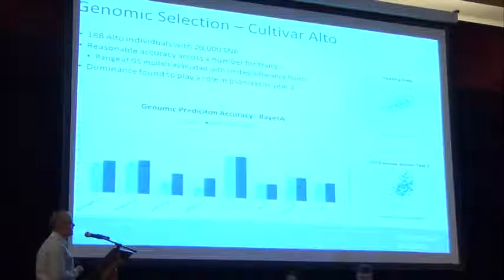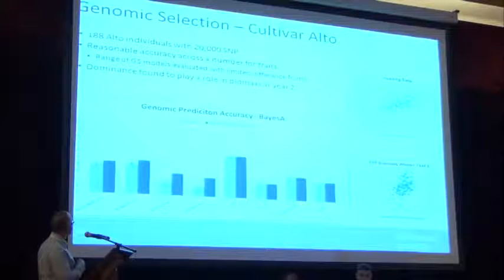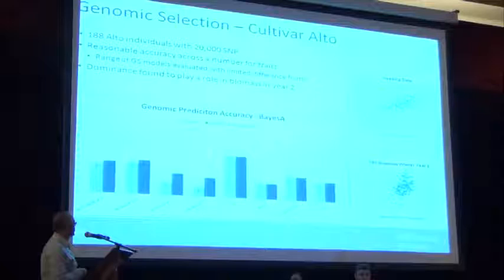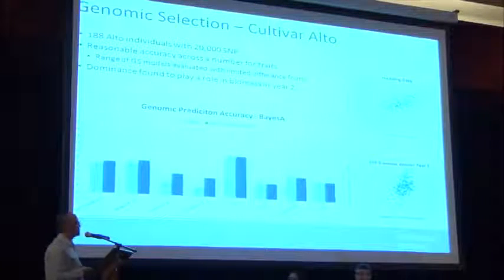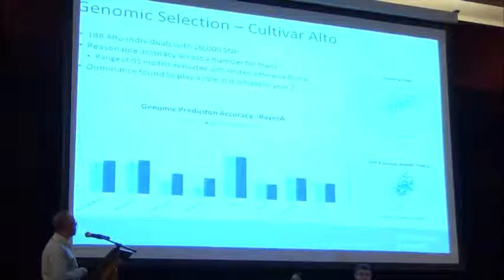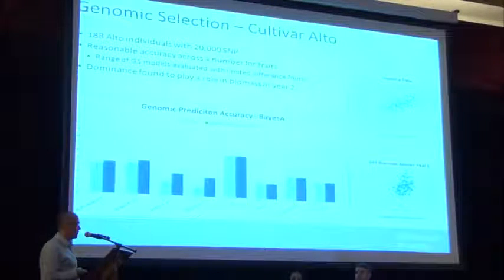In cultivar Alto with 188 individuals, we achieved quite reasonable accuracy across a number of traits — autumn, winter year one, winter year two, and spring biomass yield, heading date, ROS4, fructan, and water-soluble carbohydrates. It didn't really matter which genomic selection method was used — they were all reasonably similar. When only additive effects were included versus adding dominance effects, dominance seemed of some importance for biomass yield in year two, suggesting a transient effect depending on the year or conditions.